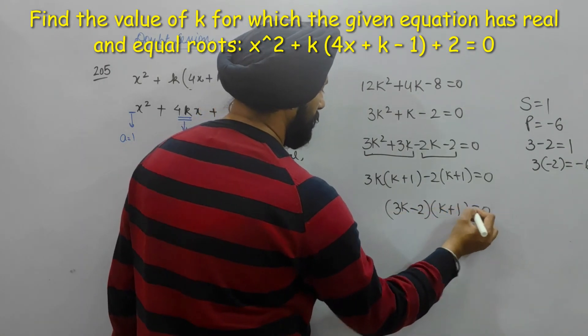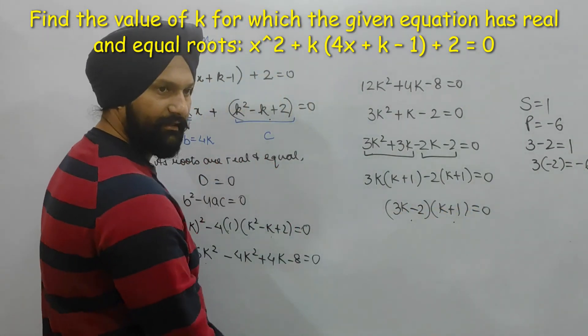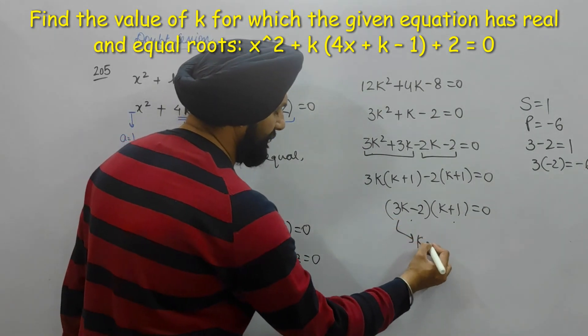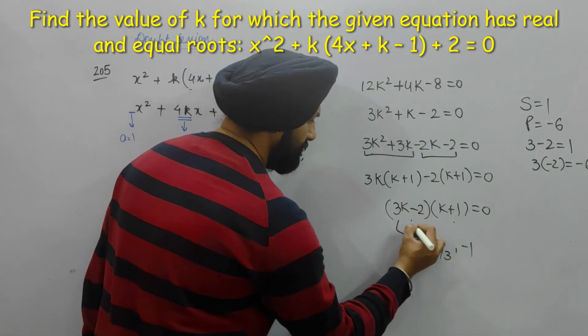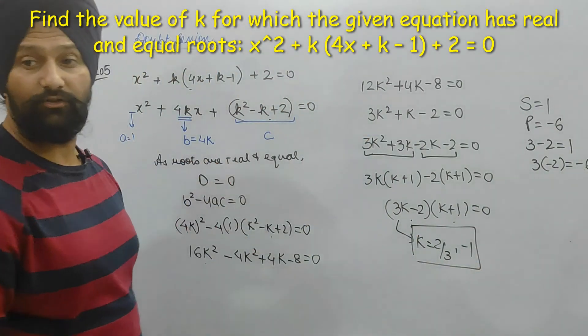So either this is your answer or this is your answer. So here the answer k = 2/3, and here the answer k = -1. So that is my answer, understood?